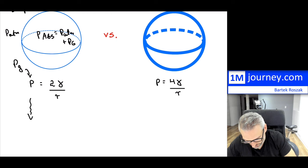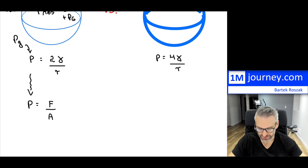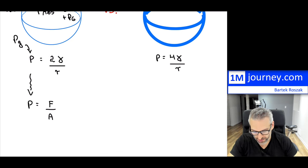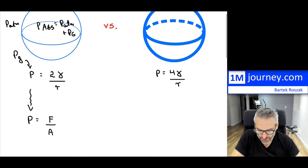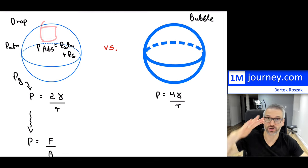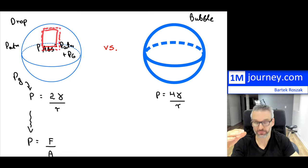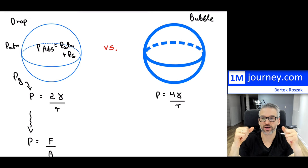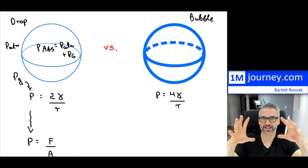Starting with the drop: pressure equals force divided by area. We want to relate that force and area back to the surface tension forces. To do this, we take the actual surface, break it somewhere, and examine any piece on the outside. On the boundary of that piece, surface tensions hold it in, withstanding the pressure that is pushing outward — assuming the system is static.